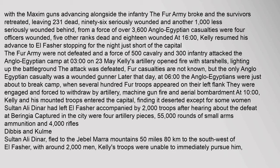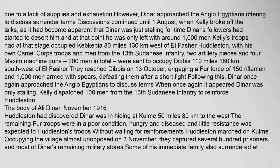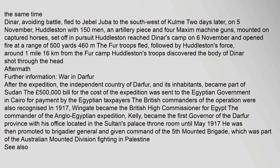Sultan Ali Dinar fled to the Jebel Mara mountains, 50 miles away. Due to a lack of supplies and exhaustion, Dinar approached the Anglo-Egyptians offering to discuss surrender terms. Discussions continued until 1 August, when Kelly broke off the talks as it had become apparent that Dinar was just stalling for time. Dinar's followers had started to desert him and at that point he was only left with around 1,000 men. Kelly's troops had occupied Kebkabia, 80 miles away. Dinar, avoiding battle, fled to Jebel Juba to the southwest of Qumme. Two days later, on 5 November, Huddleston with 150 men, an artillery piece and four Maxim machine guns mounted on captured horses set off in pursuit. Huddleston reached Dinar's camp on 6 November and opened fire at a range of 500 yards, and the Sultan was killed in action.